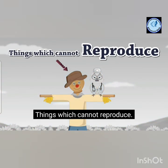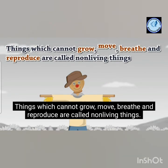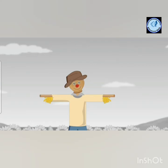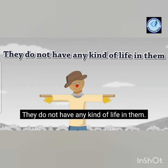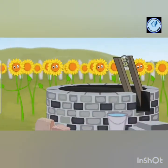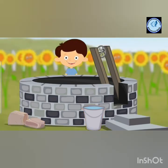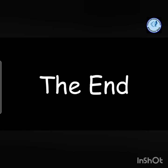A scarecrow cannot reproduce. Things which cannot grow, move, breathe, and reproduce are non-living things — they do not have any life in them. Like this well, these rocks, this bucket, and the water inside the bucket — they are all non-living things. So children, I hope we understood the difference between living and non-living things.